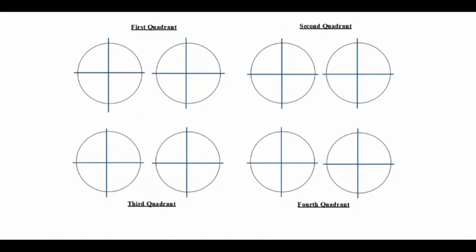Now we'll see the first quadrant again. In this case, we draw a line from the center. The starting point is here and the end point is here. Draw the arc from here to here — the arc comes down. The Y-axis also comes down in the same way.